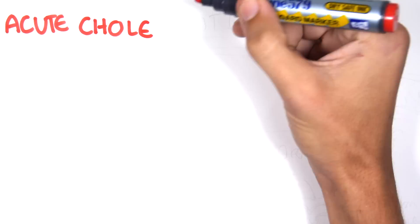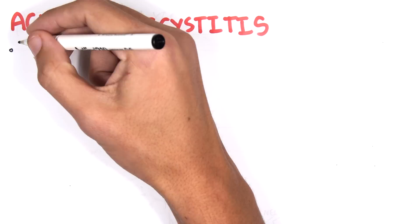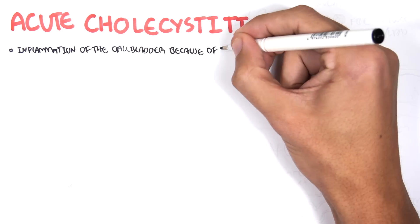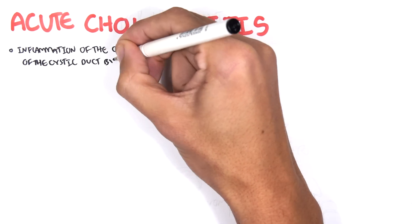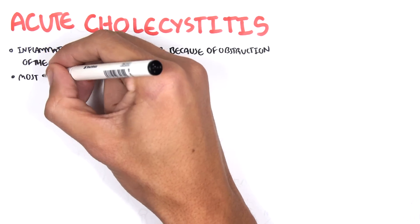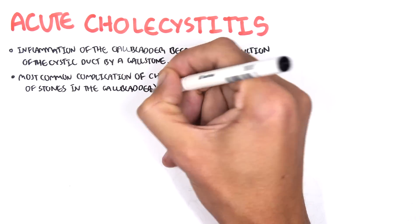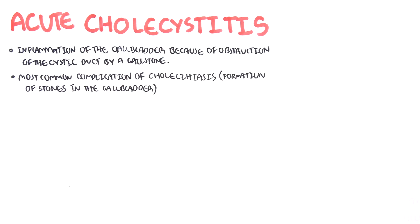In this video, we're going to talk about acute cholecystitis. This is an overview and introduction. Acute cholecystitis is inflammation of the gallbladder, and it's usually because of obstruction of the cystic duct by gallstones. Acute cholecystitis is the most common complication of cholelithiasis, which is formation of gallstones in the gallbladder.